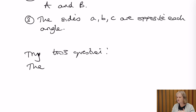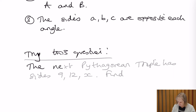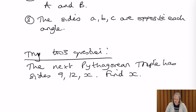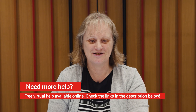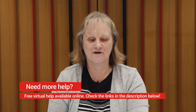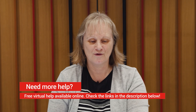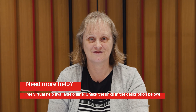Here's a question for you to try to practice Pythagorean theorem. We've looked at Pythagorean triples, and the next one in the series has sides 9, 12, and x. Find x, which you'll identify as the hypotenuse — the longest side — and you should get the answer shown. If you need extra help, please reach out using the links provided in the description below. Also check out the other videos in the series. Thanks for watching!